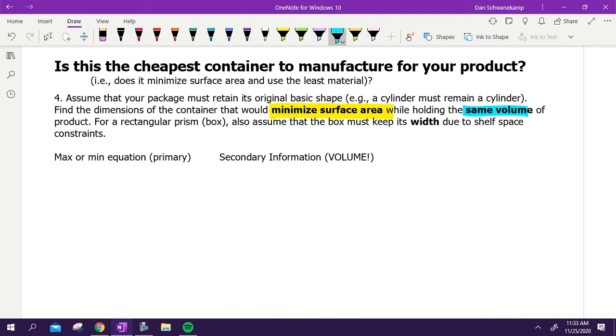This is an optimization question. How do you know? We're minimizing something. Underneath where it says max or min equation, our primary equation, we're going to write what we're trying to maximize or minimize—in this case surface area. So for a box, the surface area is 2LW + 2LH + 2WH.